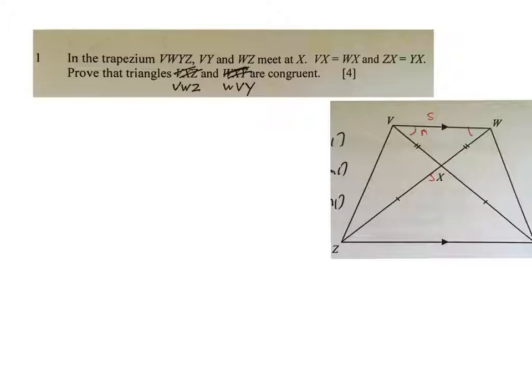For example, question one, I need to prove triangle VWZ and WVY are congruent. Your vertex V must correspond to W in the triangle. Your second vertex W must correspond to V. Similarly Z must correspond to Y in all your working. The orientation of how you write matters.